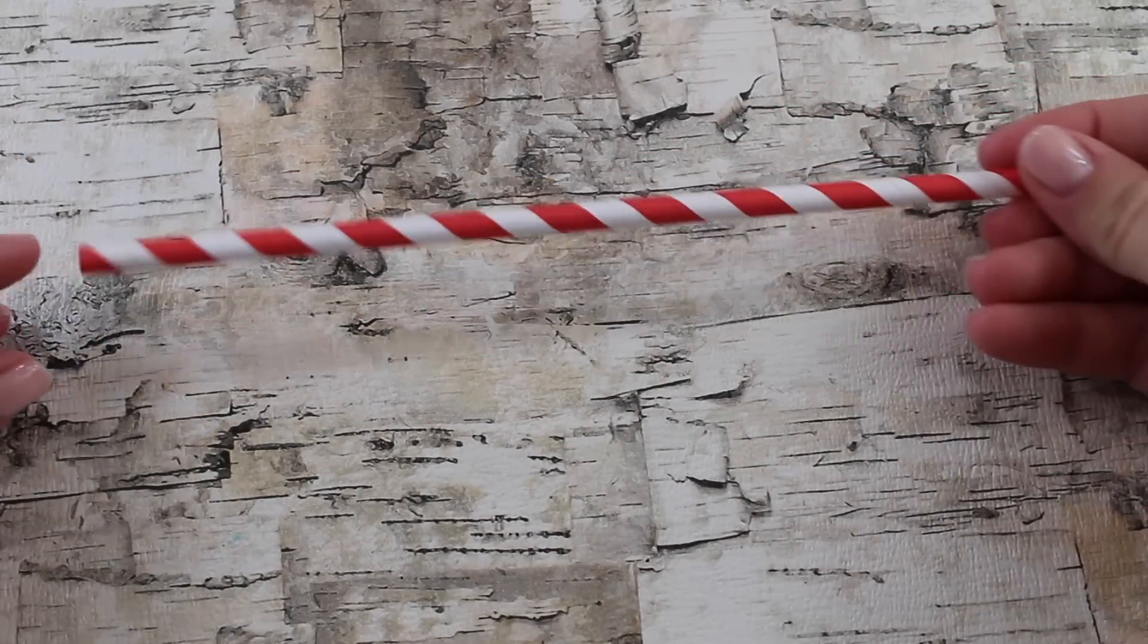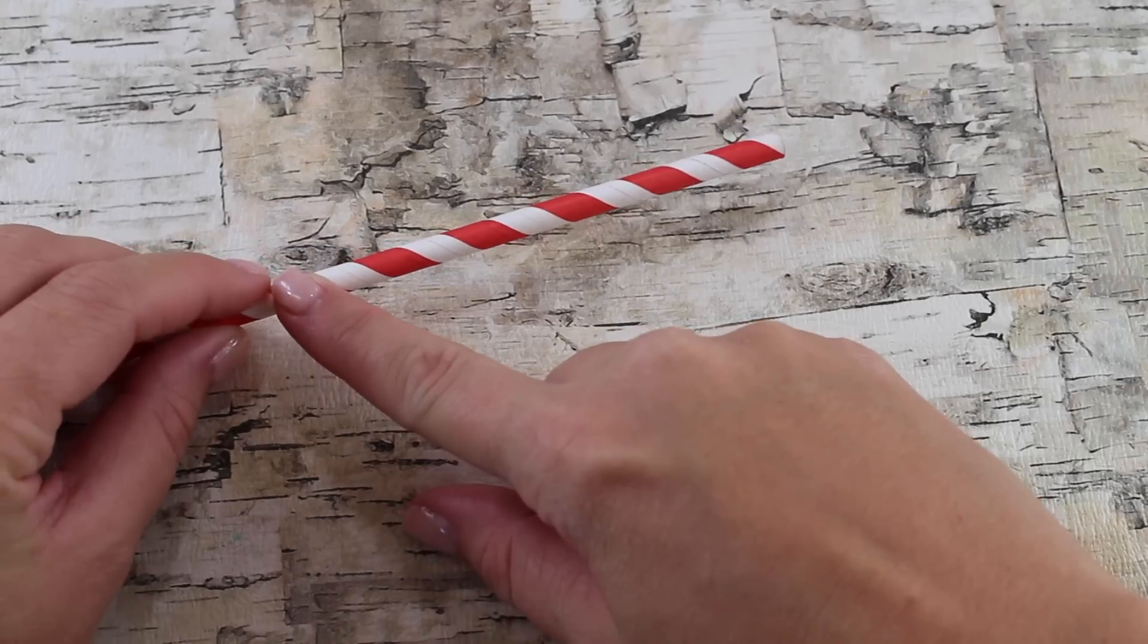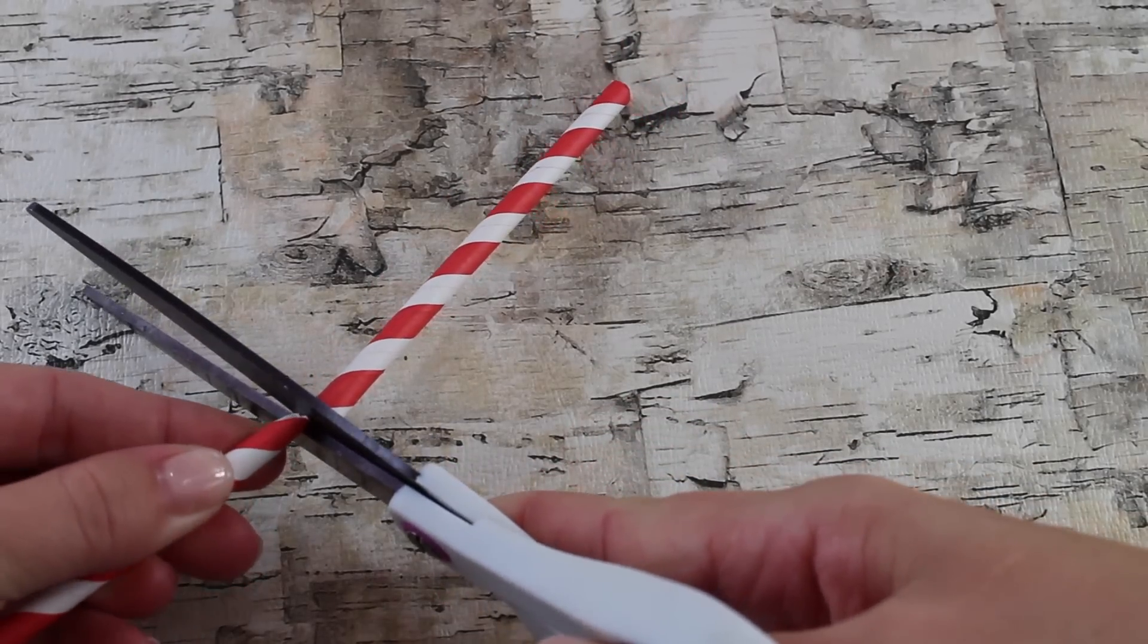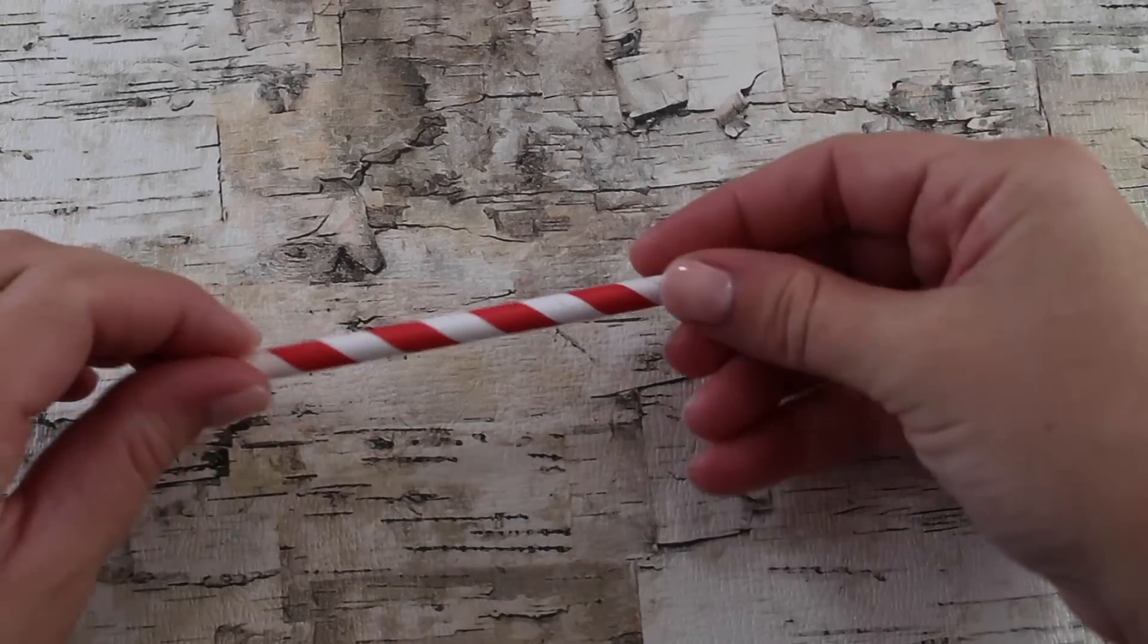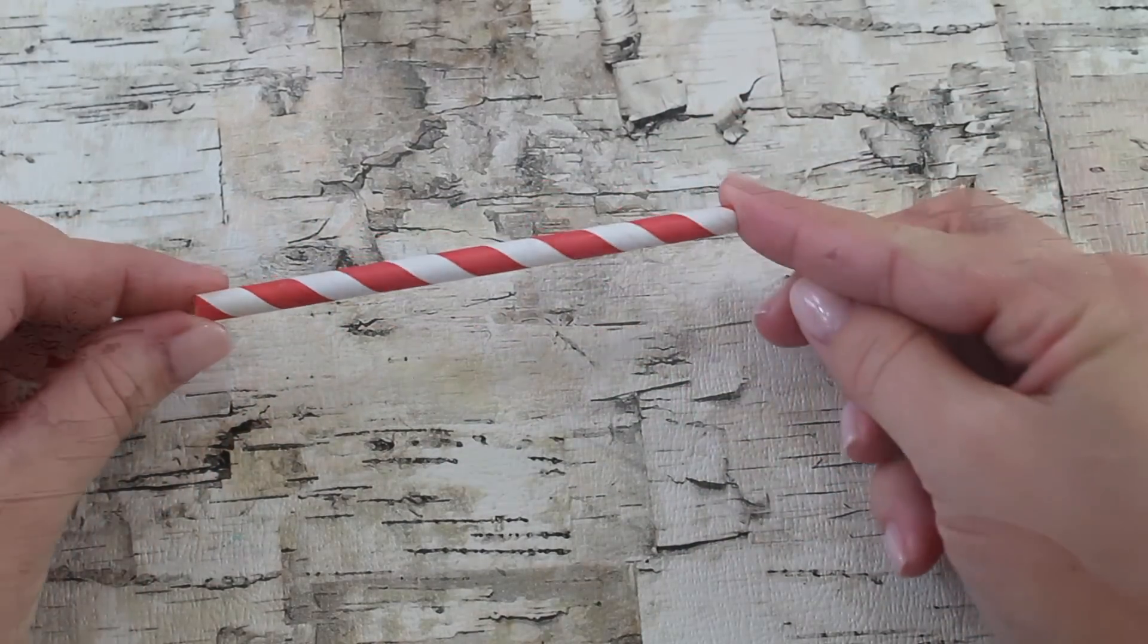Start by taking your paper straw and cut it between 4 and 5 inches long. You can make your rolling pin longer, but this is about the size of AGs and OGs put together. So this will be the handle part for the rolling pin.